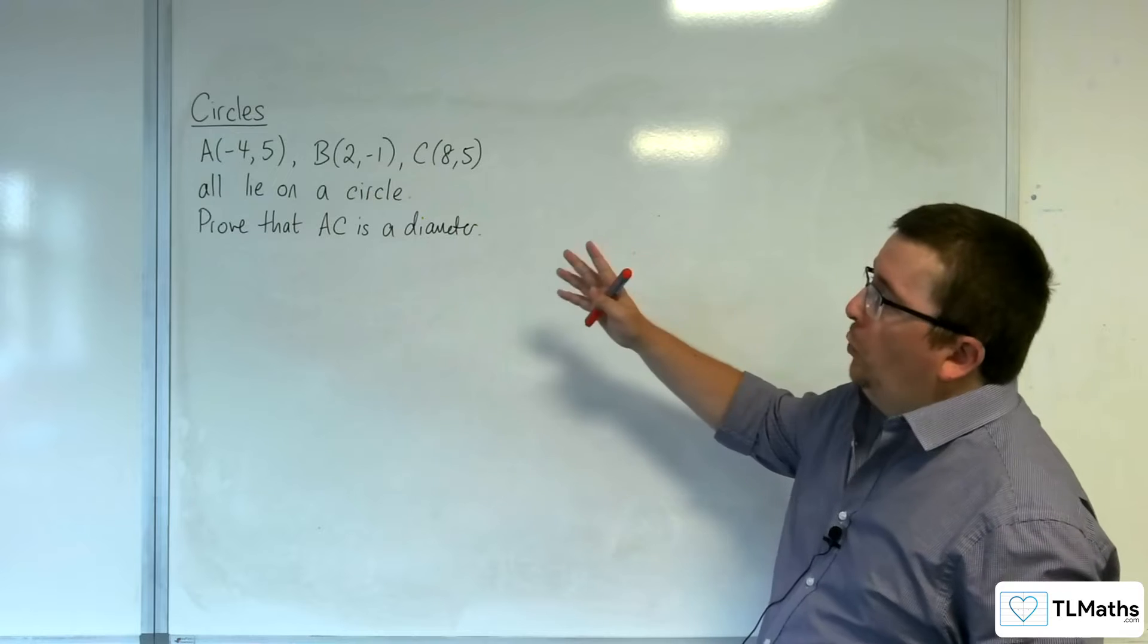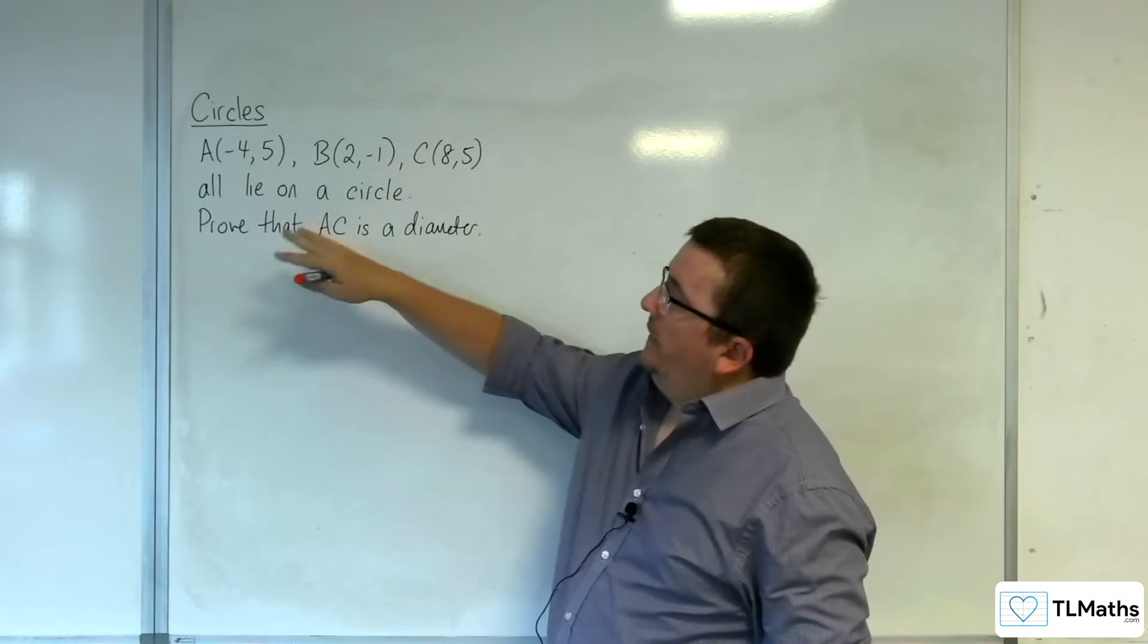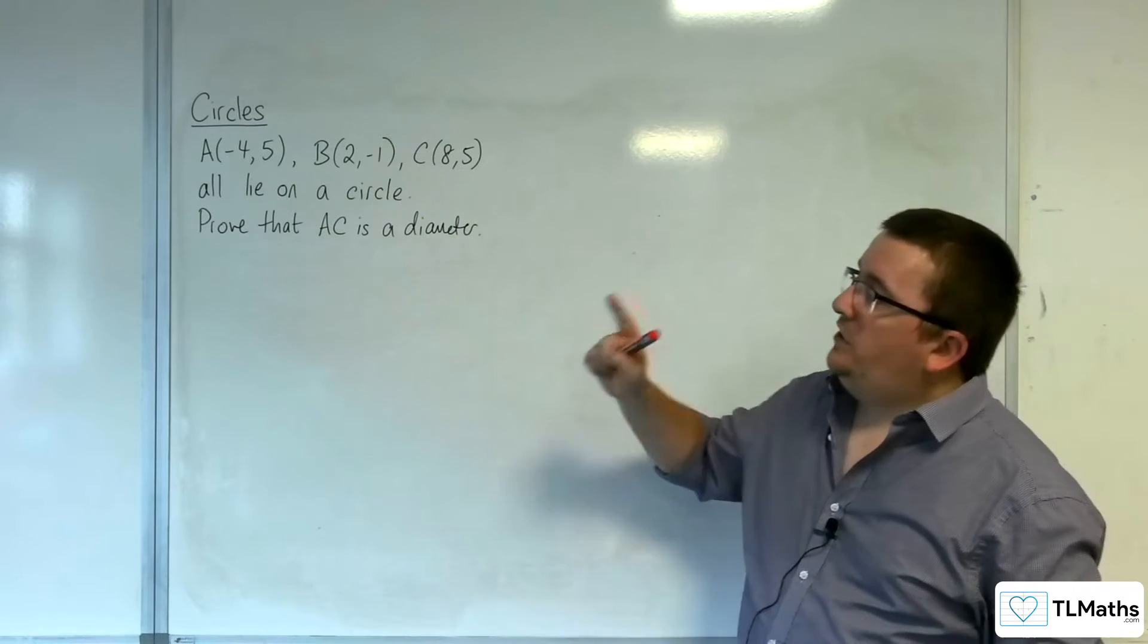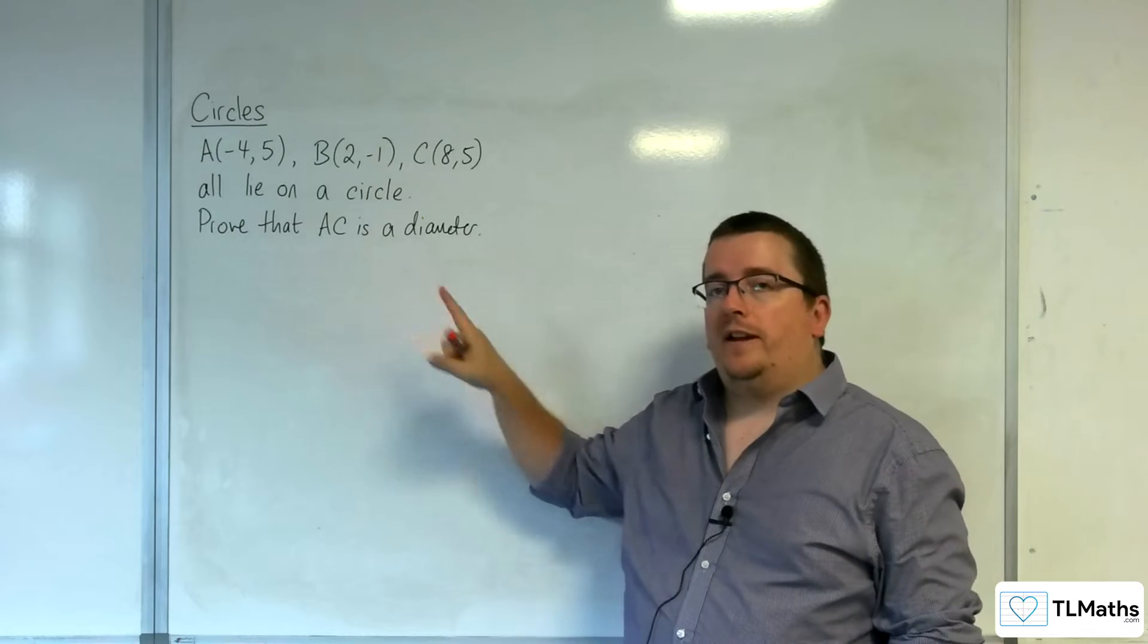In this video, we've been given three coordinates, A, B and C, and they all lie on a circle. We need to prove that AC is a diameter.